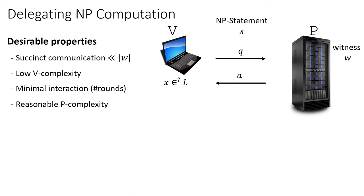We want to minimize the interaction or the number of rounds of communication. We can hope for a two-message protocol where the verifier first sends a query q and then the prover responds with an answer a. Furthermore, we can hope that the query q can be generated independently of the particular NP statement x that we want to verify.